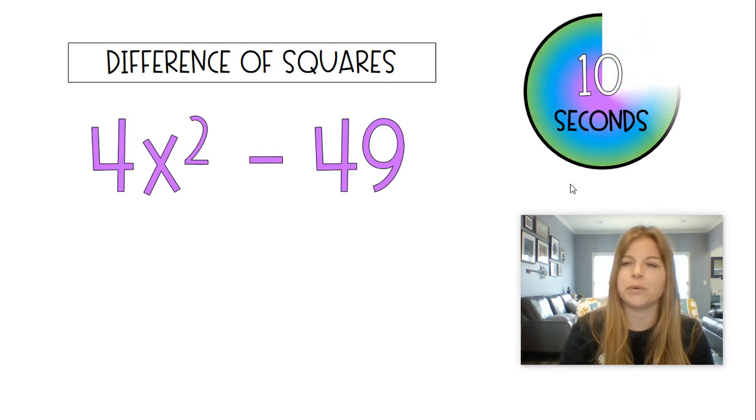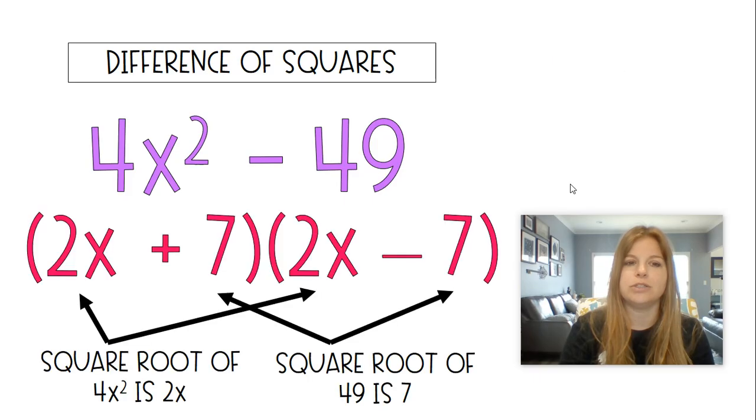4x squared minus 49. So remember, square root of the first term, square root of the last term, one gets a plus, one gets minus. 2x plus 7, 2x minus 7. Square root of 4x squared is 2x. Square root of 49 is 7. So that's why I get this result. Last one, guys.